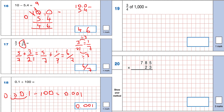Question 19: three quarters of 1,000. Divide by the denominator then multiply by the numerator. 1,000 divided by 4: half of 1,000 is 500, half of 500 is 250. A quarter is 250, so three quarters is 250 times 3: 0 times 3 is 0, 5 times 3 is 15 carry 1, 2 times 3 is 6 add 1 is 7. The answer is 750.